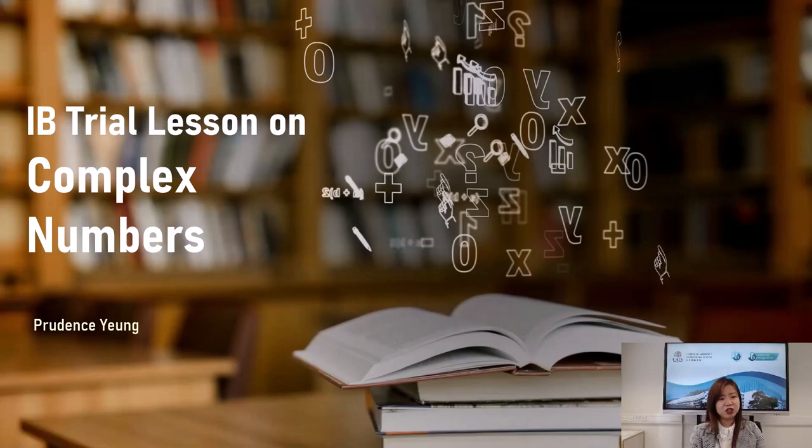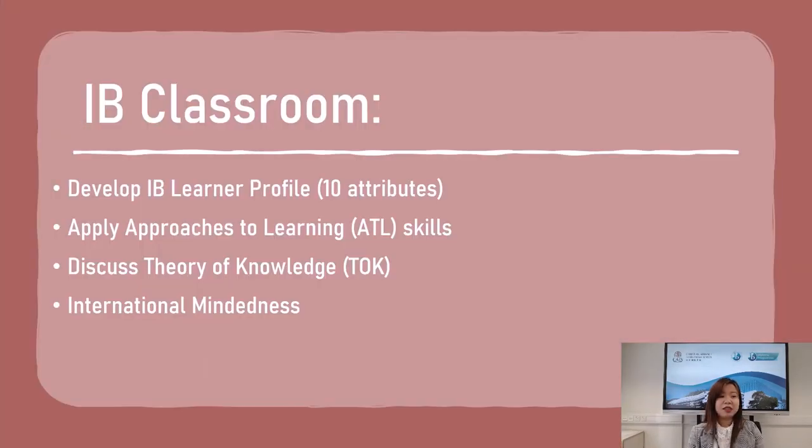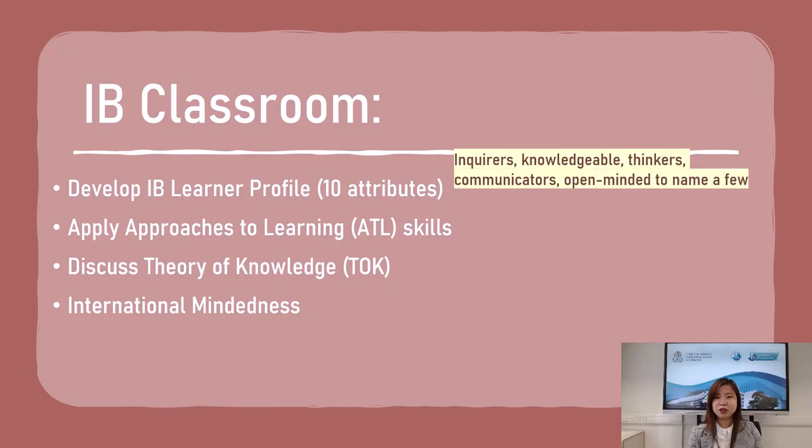Before we dive straight into the trial lesson on complex numbers, it's good to go over what an IB classroom looks like. In an IB classroom, teachers assist students to develop the IB learner profile, which consists of 10 attributes. For example, teachers help students to be inquirers, to be knowledgeable, to be thinkers, to be communicators, to be open-minded, just to name a few.